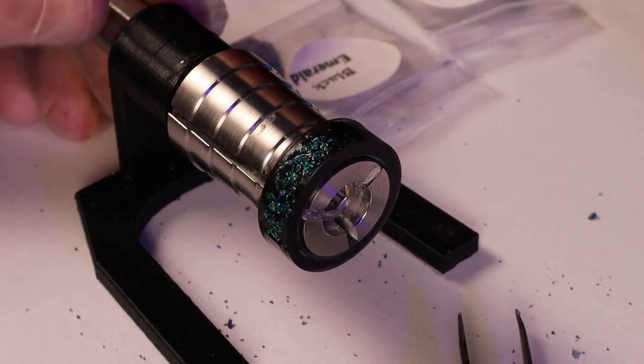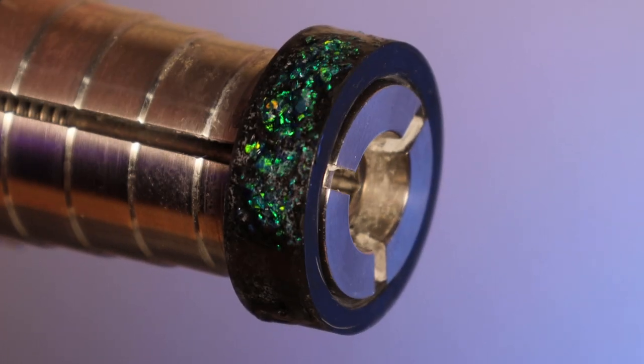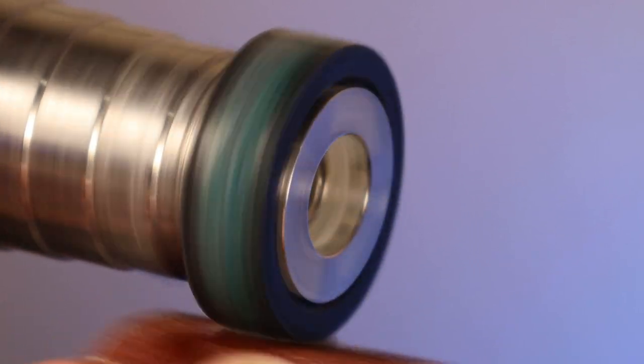This basically just causes a chemical reaction with glue and makes it harden right away. And with everything completely hardened, I can start shaping this with some 120 grit sandpaper, just like I did on the inside.